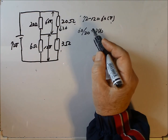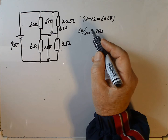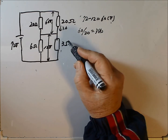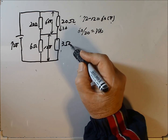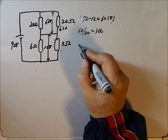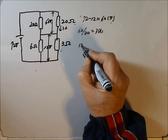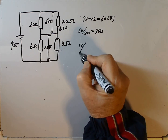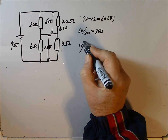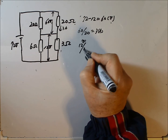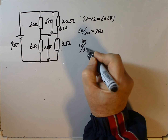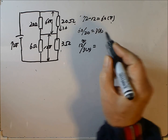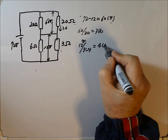Therefore, the current flowing through the resistance 3 ohm is 4 amperes, because it is 12 divided by 3 ohm equal 4 amperes.